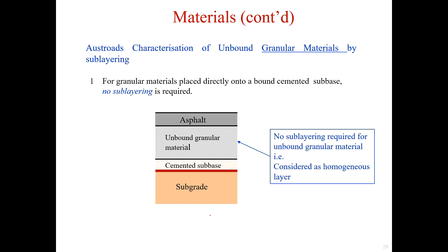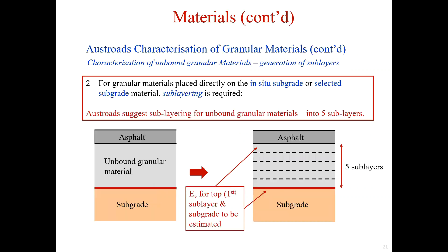For the treatment of granular materials, there are two scenarios. For granular materials placed directly onto a bonded cemented subbase, no sublayering is required and it is considered a homogeneous layer. If granular materials are placed directly on a subgrade with no cemented subbase, then sublayering is required. According to Austroads, it is advised to divide the total thickness of the unbound granular materials into five equal sublayers.